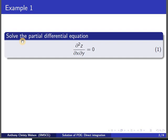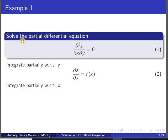We can integrate this partially with respect to x or y. Because we are integrating partially, the other variable or functions of the other variable will be treated as constant. When we integrate partially with respect to y, we get ∂z/∂x equal to a constant, which can be treated as a function of x. Since x and y are independent, f(x) will be constant with respect to y. Similarly, integrating partially with respect to x gives z equal to ∫f(x)dx plus g(y).